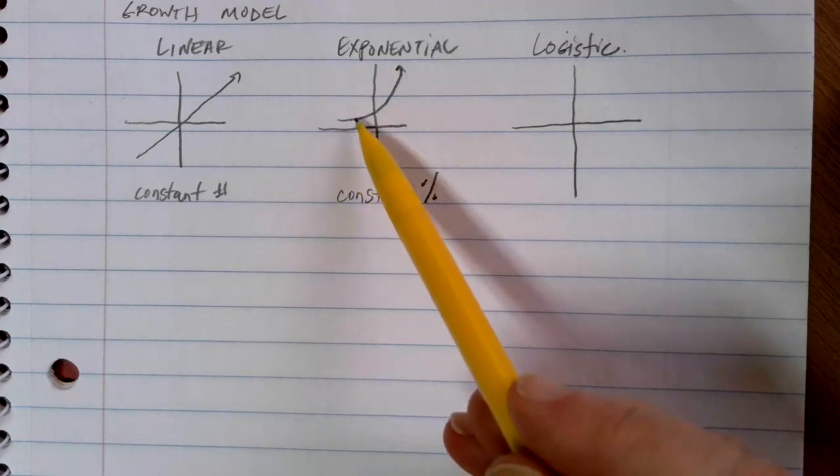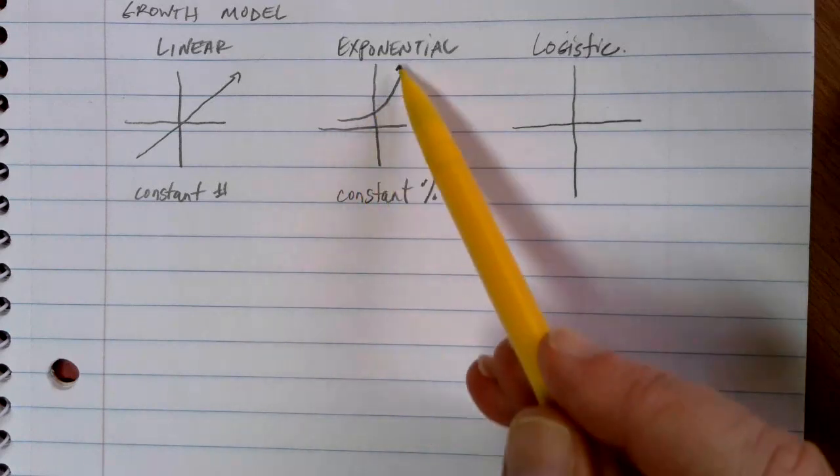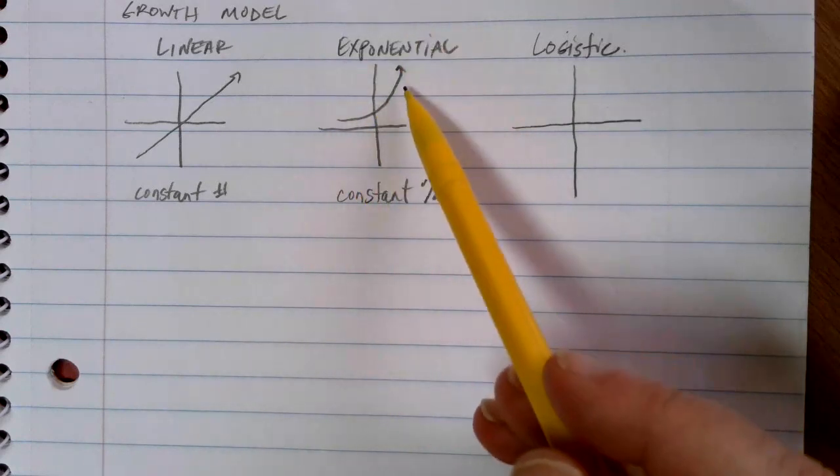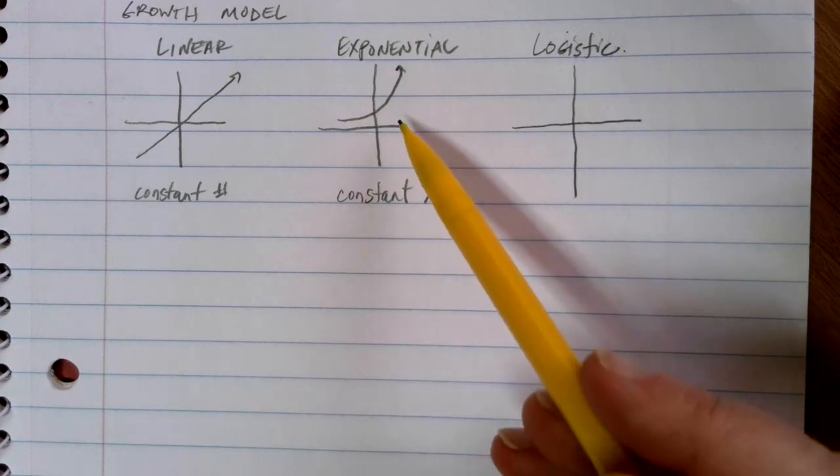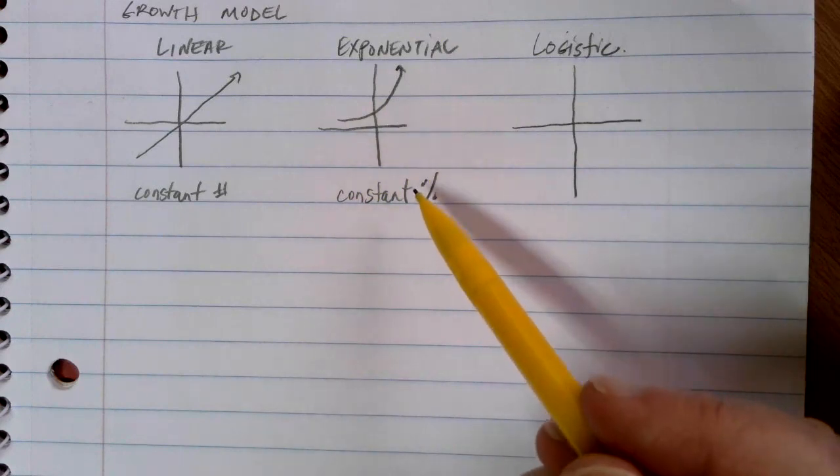Now, if you think about the way that exponential functions work, they keep going forever and ever faster and faster. And when you're doing predictions, a lot of times that doesn't make sense.